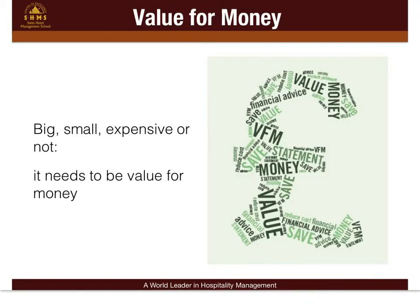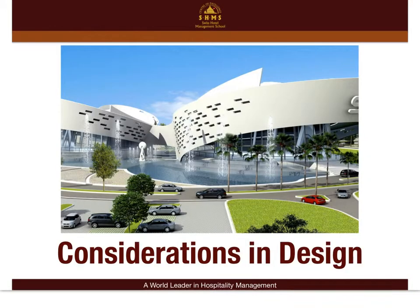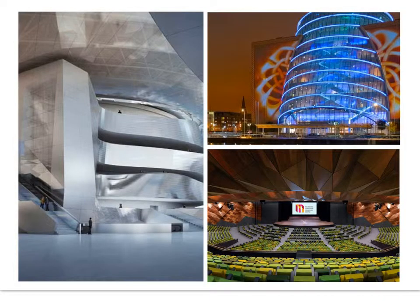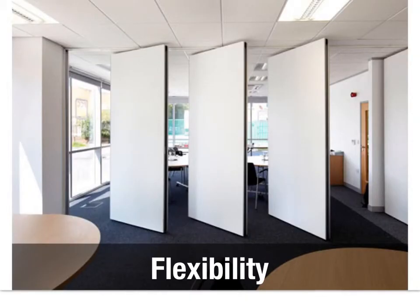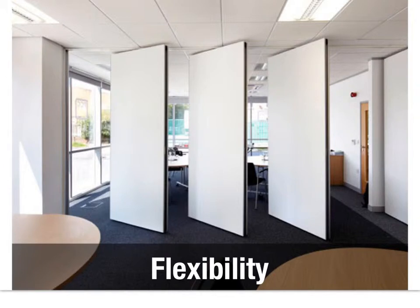It also needs to be value for money. When talking about flexibility in design, we mean flexibility in terms of room size. For example, you can have walls that divide to make the room bigger or smaller. The lights need to be on both sides once the room is divided, and computerized systems need to control different equipment, adapting to different plugs and systems.